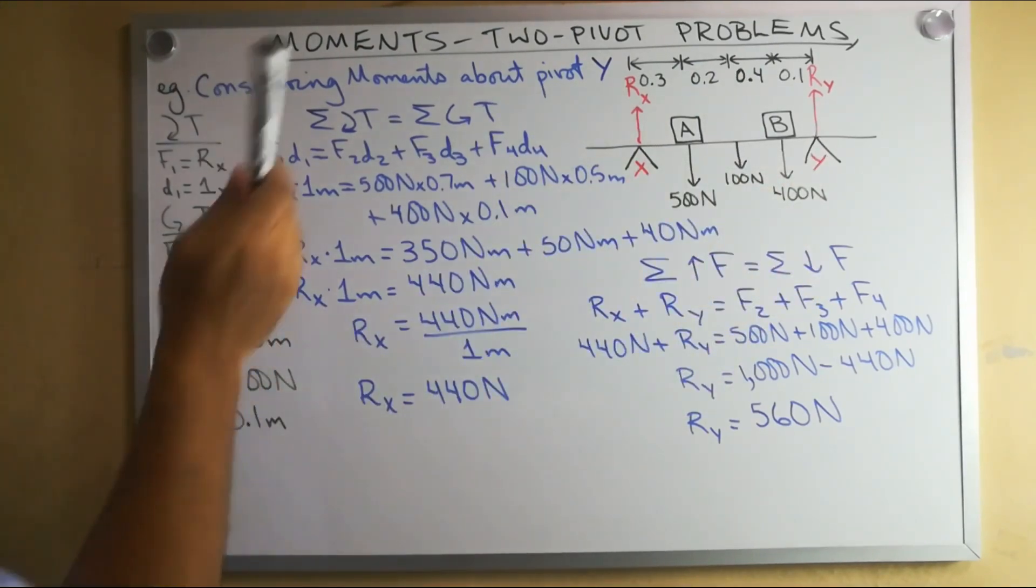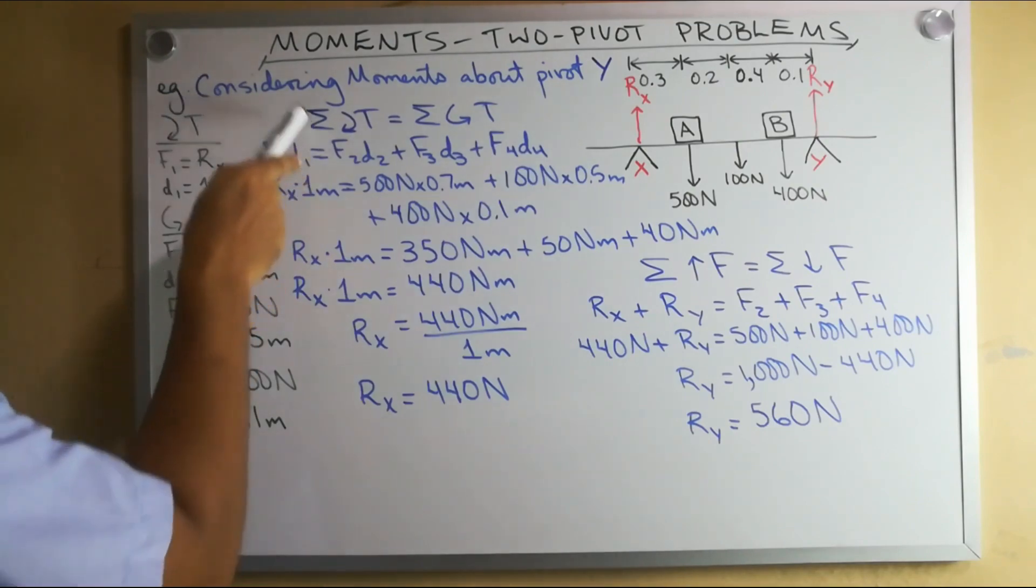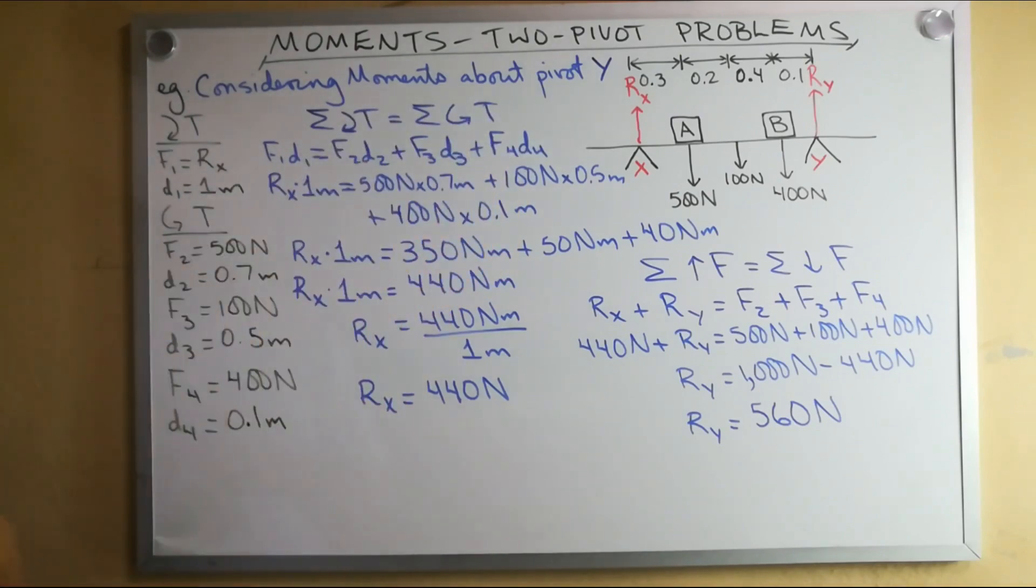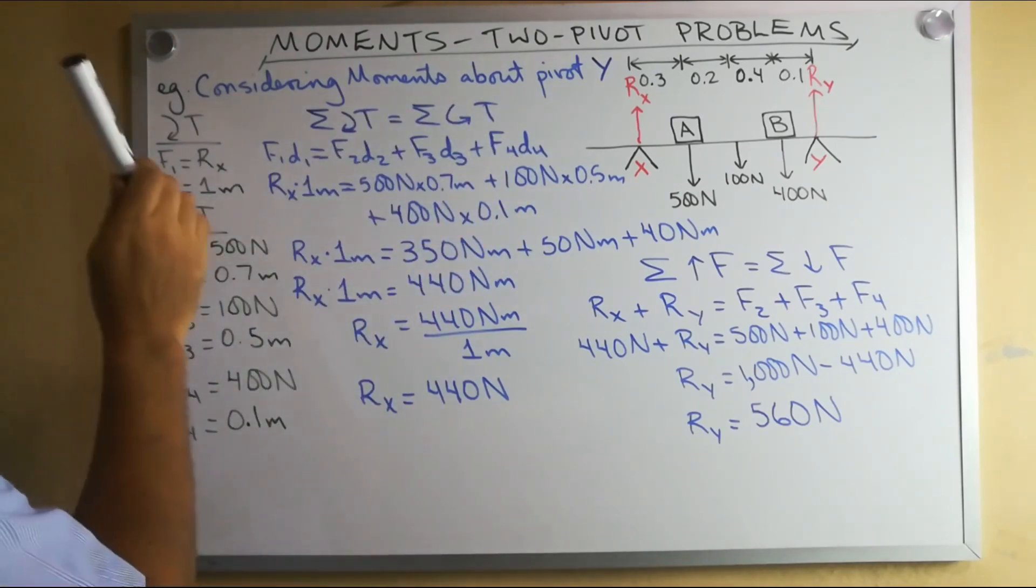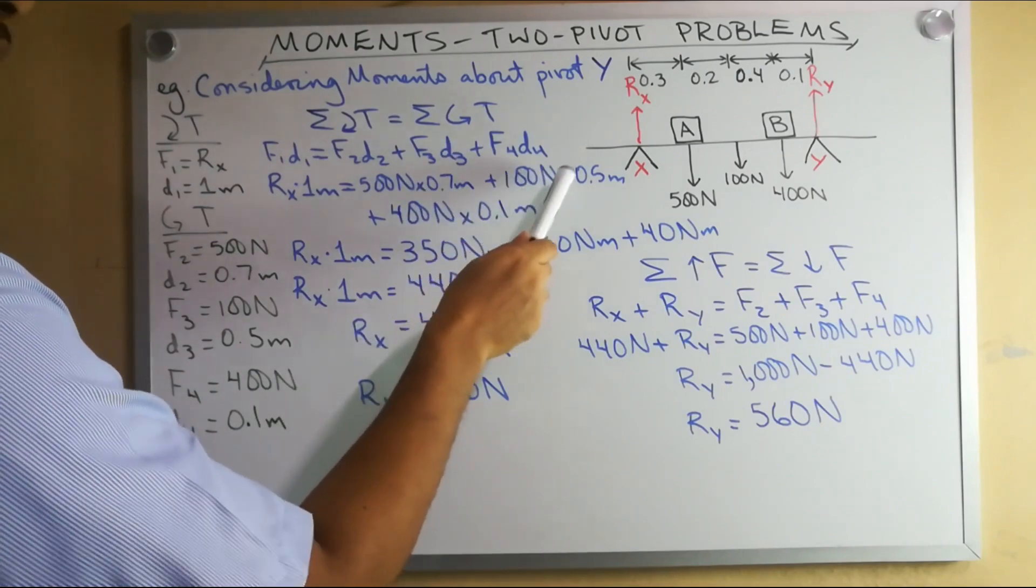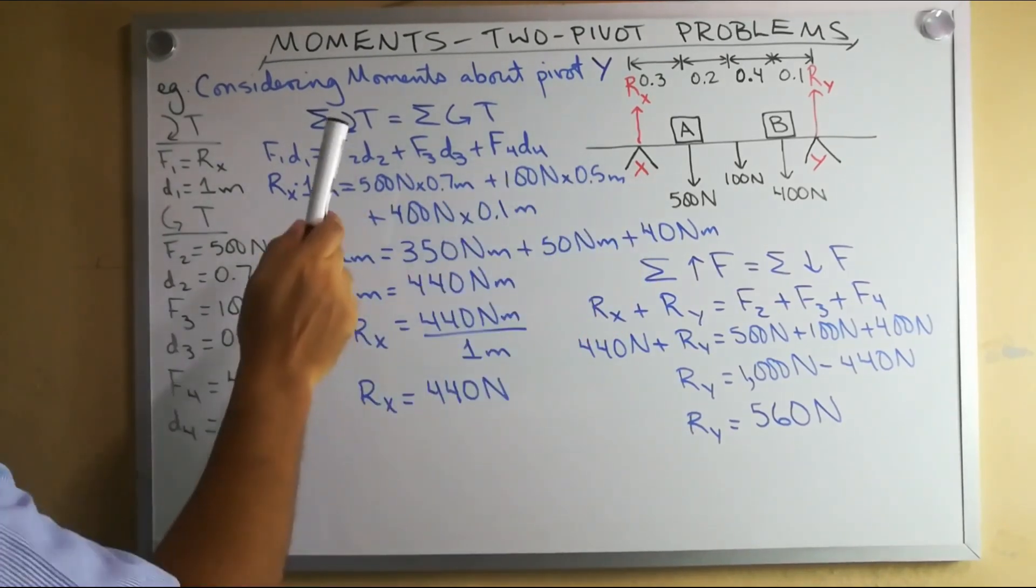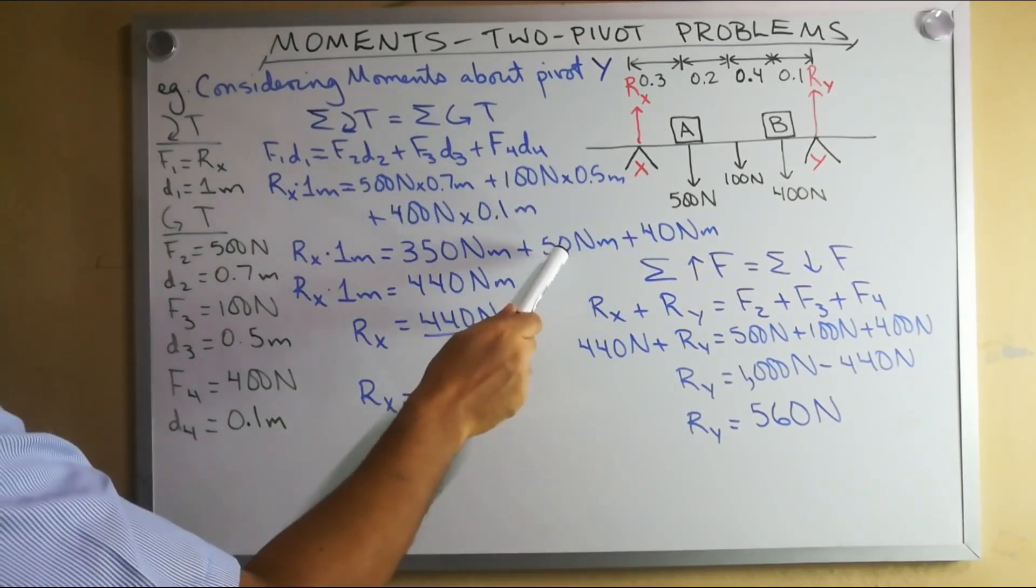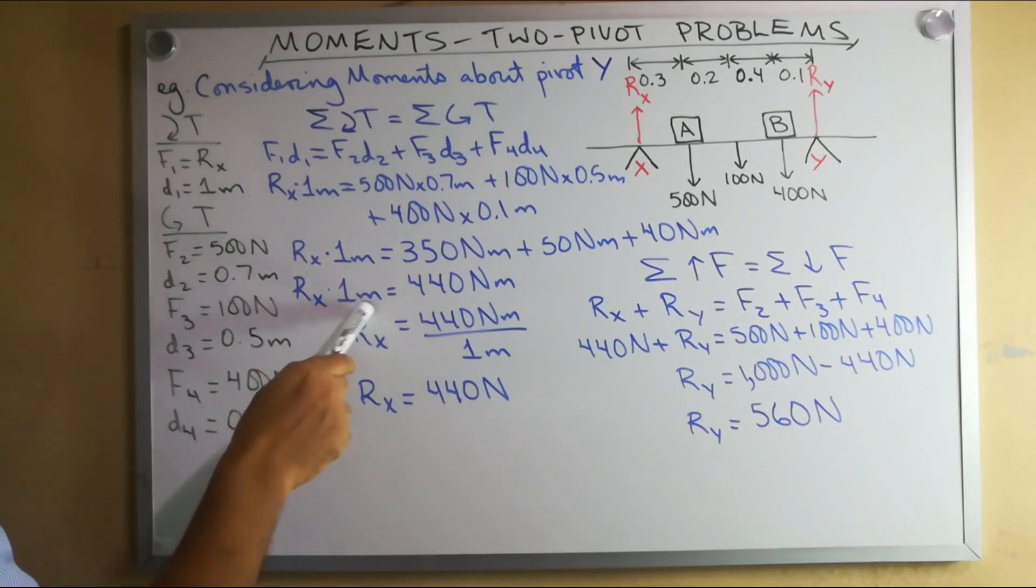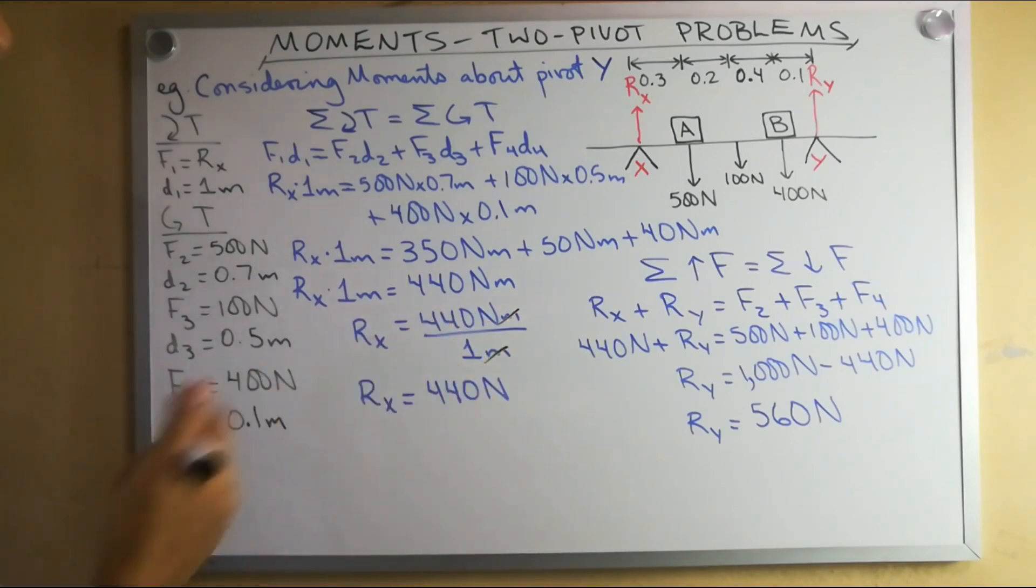So we have our formula, F1 D1 is equal to F2 D2 plus F3 D3 plus F4 D4. This is the sum of all the clockwise moments and this is the sum of all the anticlockwise moments. When we substitute our values, we'll have R sub X times 1 meter equals 500 newtons times 0.7 meters plus 100 newtons times 0.5 meters plus 400 newtons times 0.1 meters. Simplifying these, we'll get 350 newton meters plus 50 newton meters plus 40 newton meters. That adds up to 440 newton meters. We will then divide that by 1 meter and get 440 newtons.